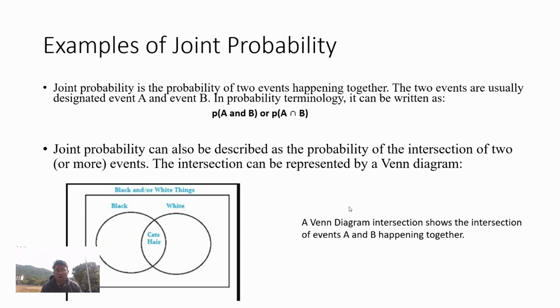Joint probability can also be described as the probability of the intersection of two or more events. The intersection can be represented by a Venn diagram, as shown in this PPT. As you can see in this Venn diagram, the intersection shows events A and B happening together.